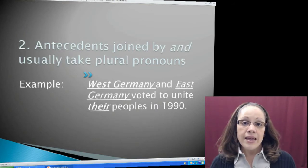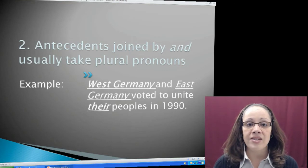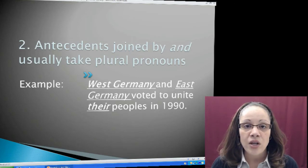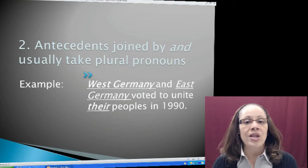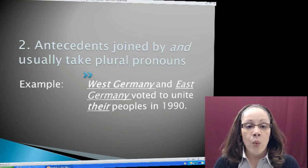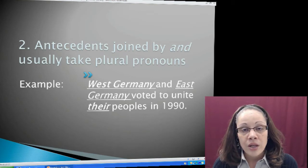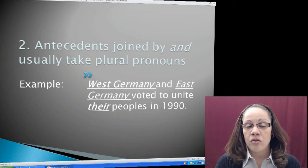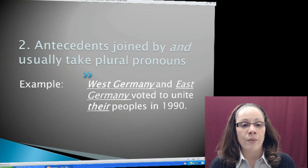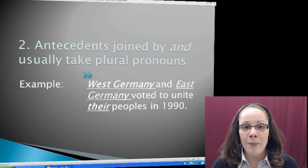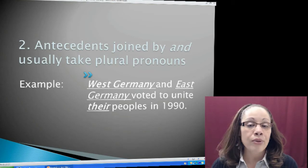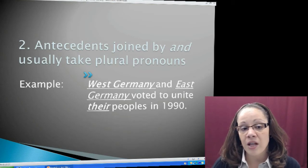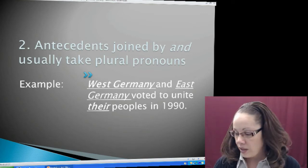Our second rule for subject-pronoun agreement is: antecedents joined by AND usually take plural pronouns. For example: West Germany and East Germany voted to unite their peoples in 1990. West Germany and East Germany is a compound — two subjects — which automatically means a plural subject. So I need the plural third person pronoun their — T-H-E-I-R — in reference to that subject.